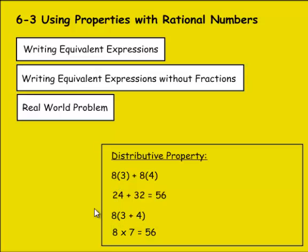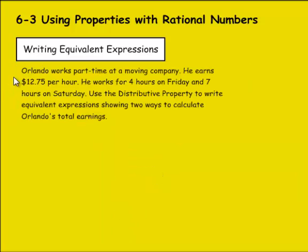We're going to do a couple examples here which show those. It says Orlando works part-time at a moving company. He earns $12.75 per hour. He works for 4 hours on Friday and 7 hours on Saturday. Use the distributive property to write equivalent expressions showing two ways to calculate Orlando's total earnings.